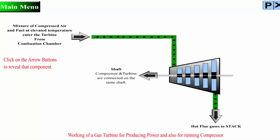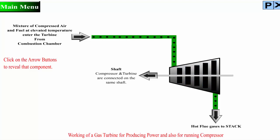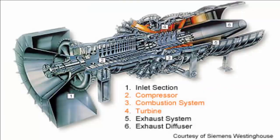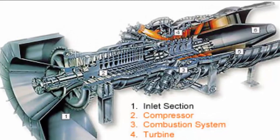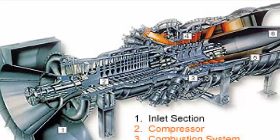The compressor draws air into the engine, pressurizes it, and feeds it to the combustion chamber at speeds of hundreds of miles per hour. The combustion system is typically made up of a ring of fuel injectors that inject a steady stream of fuel into combustion chambers where it mixes with the air. The mixture is burned at temperatures of more than 2,000 degrees Fahrenheit.